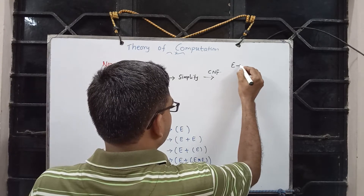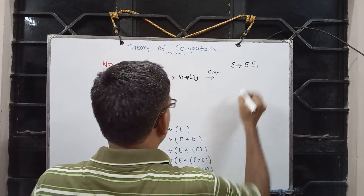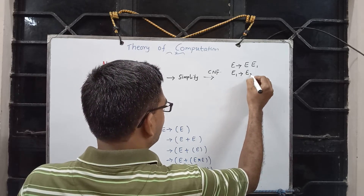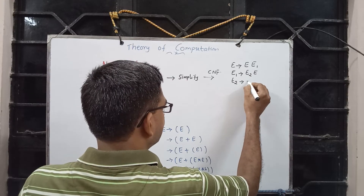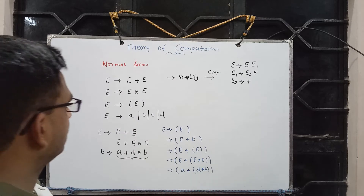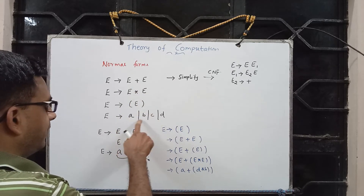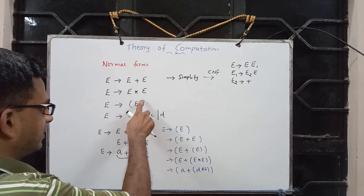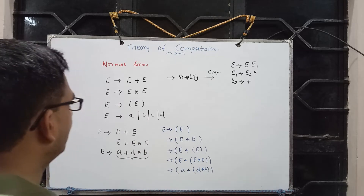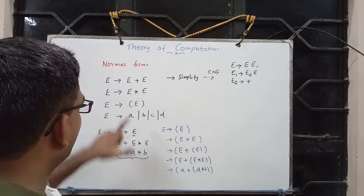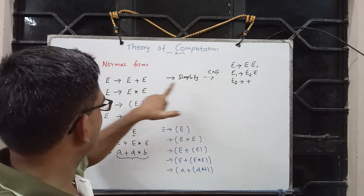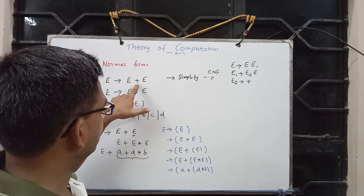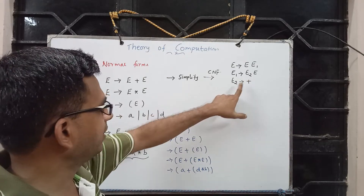In CNF, E implies E E1, and E1 implies E2 E, and E2 implies plus. Here plus is an operator, star is an operator, and A, B, C, D are like identifiers. So A, B, C, D, plus, star, left parenthesis, right parenthesis are all part of sigma, and the non-terminal set contains E alone. For the plus production, I introduce one more non-terminal and followed by E we get this.